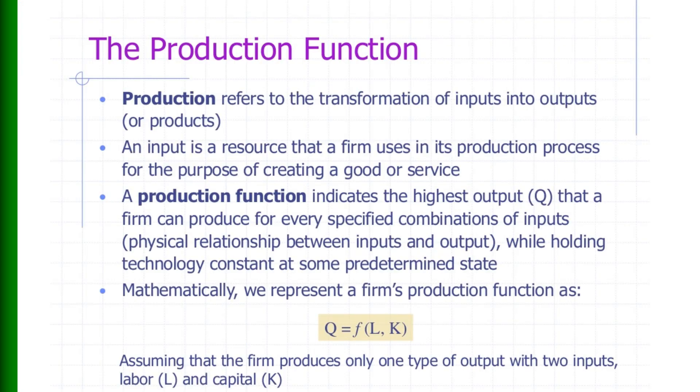Let me start with the definition of production. Production refers to the transformation of inputs into outputs or products. An input is a resource that a firm uses in its production process for the purpose of creating goods or services. A production function indicates the highest level of output Q that a firm can produce for every specified combination of inputs — that is, the physical relationship between inputs and output while keeping technology constant.